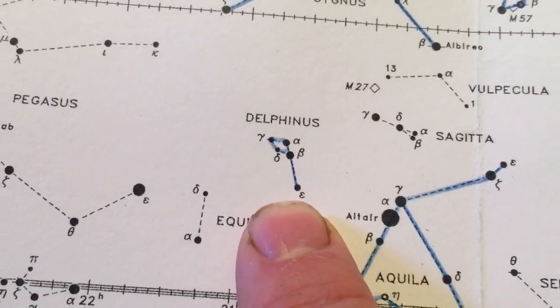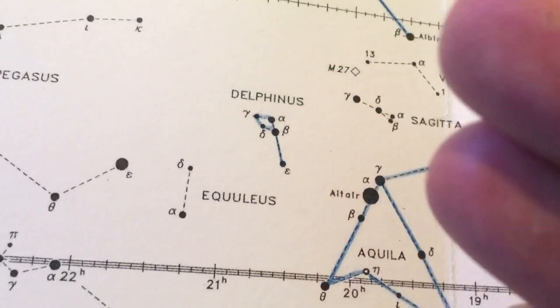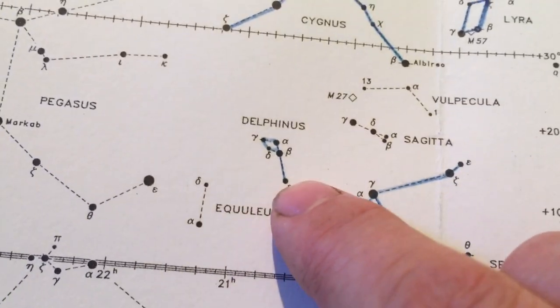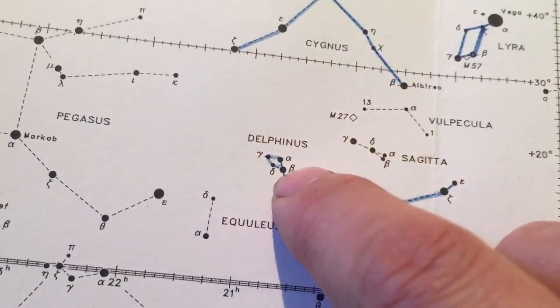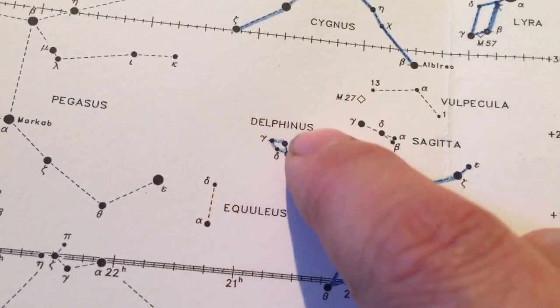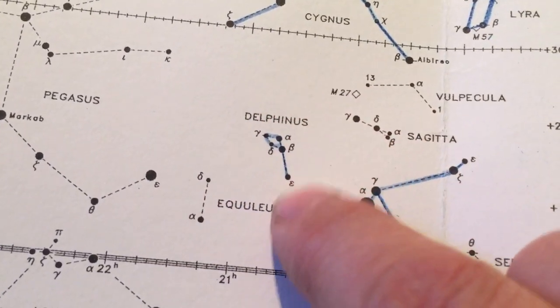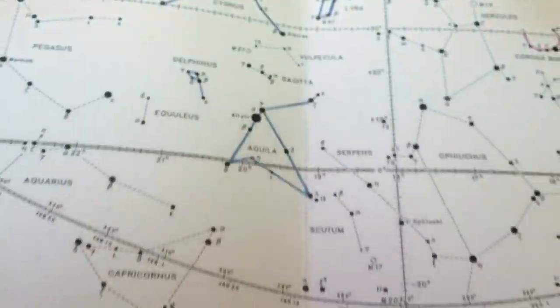Next up, a fairly small, dim constellation, but still very conspicuous and easy to see on the night sky. We have Delphinus the Dolphin. Looks like a little kite shape. This is the dolphin's body, and perhaps there's his tail trailing behind it.